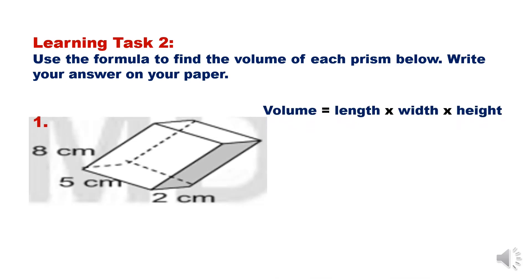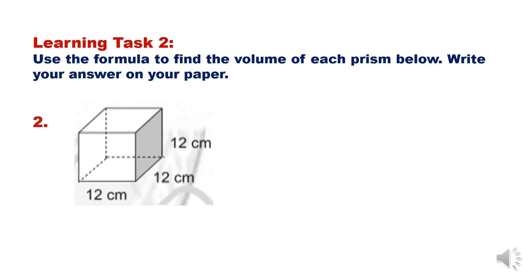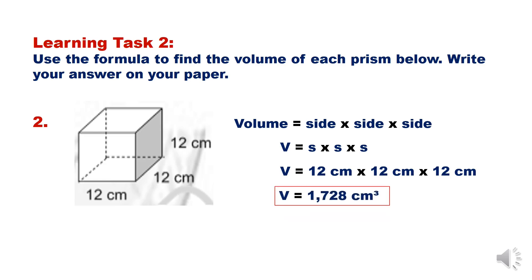Number 1: The formula is volume equals length times width times height, or V equals L times W times H. The length is 8 centimeters, the width is 5 centimeters, and the height is 2 centimeters. Multiply: volume equals 80 cubic centimeters. Number 2: Since this is a cube, the formula is volume equals side times side times side, or V equals S times S times S. So, 12 centimeters times 12 centimeters times 12 centimeters equals 1,728 cubic centimeters.